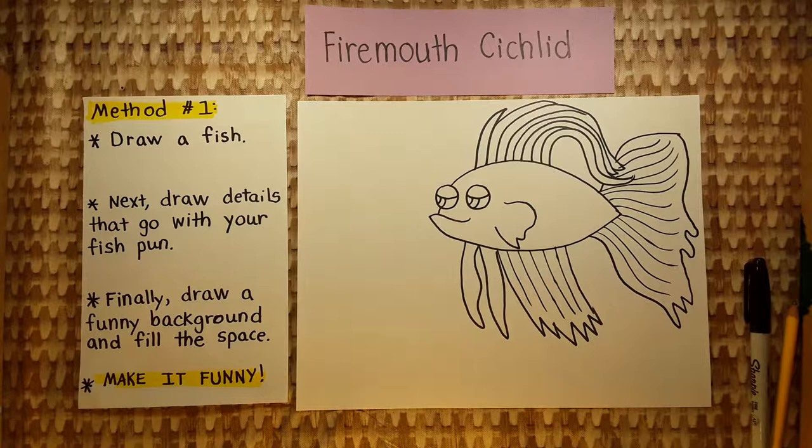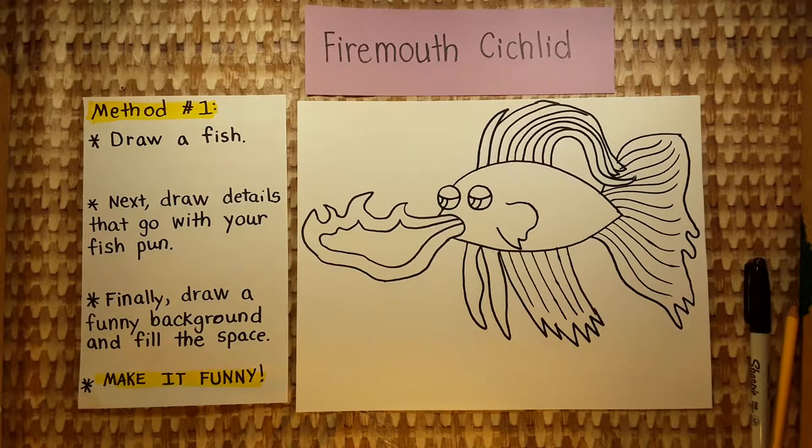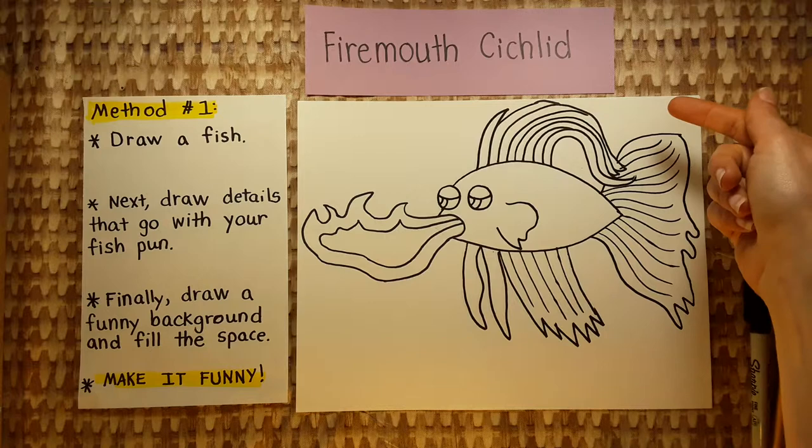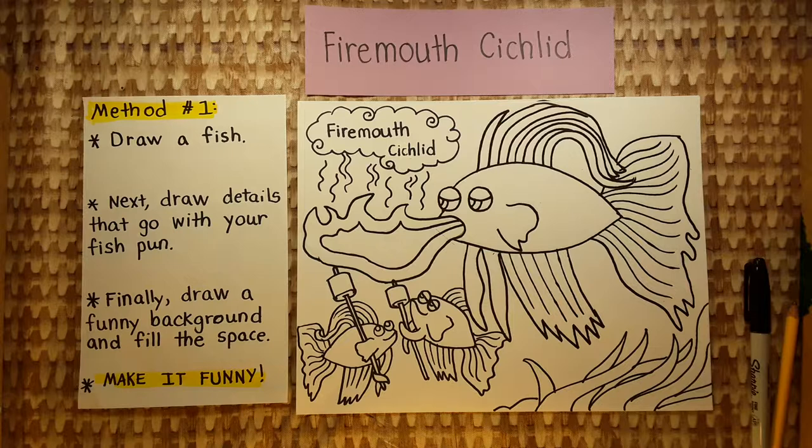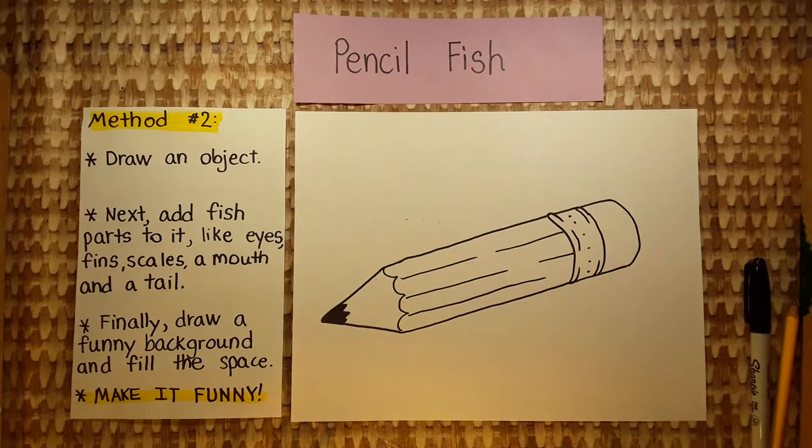There are two methods you can use to draw a fish pun. In the first method, you start by drawing a fish. Next, you draw details that go with your fish pun. In this example, the fish pun is a firemouth chichlid. Finally, draw a funny background and fill up the space.